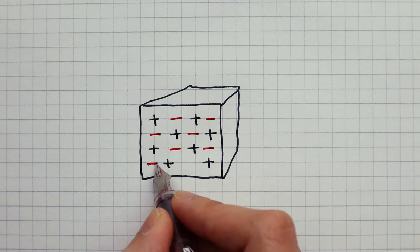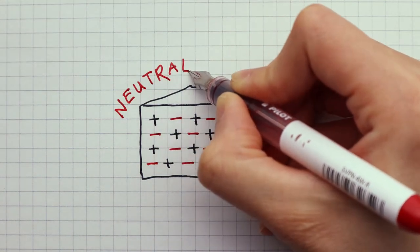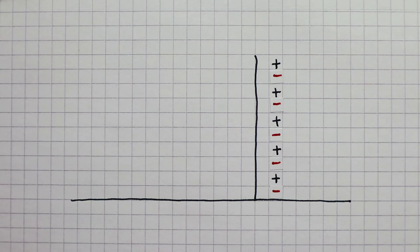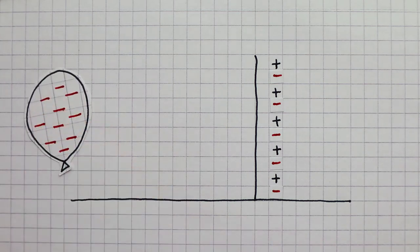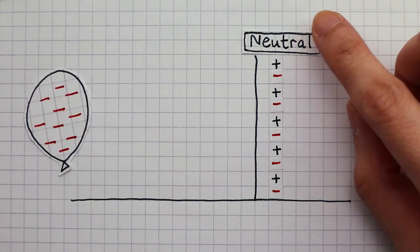Does this rule apply to neutral objects that have an equal amount of both charges? If you bring a negative object near a neutral object, what would happen?